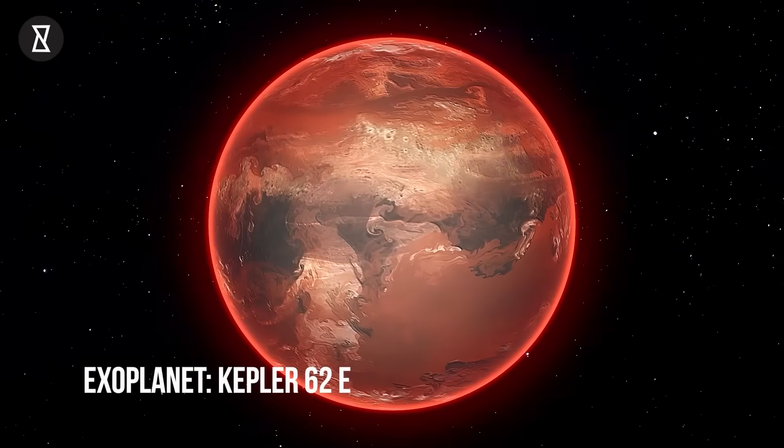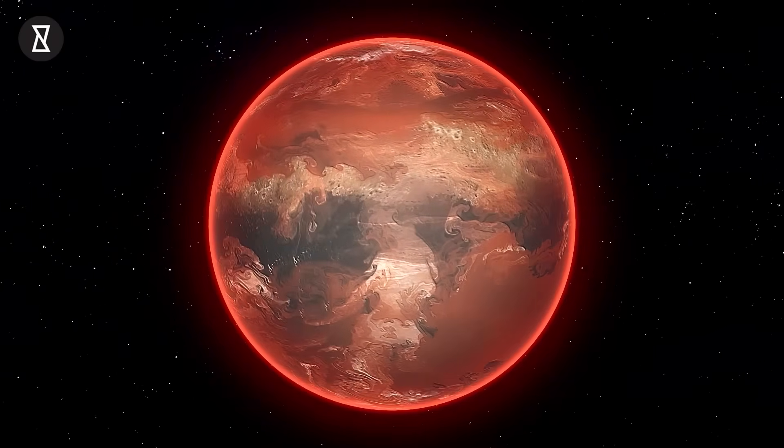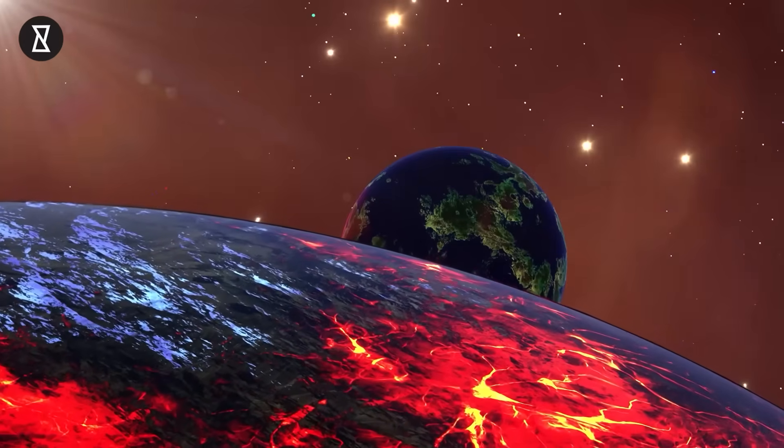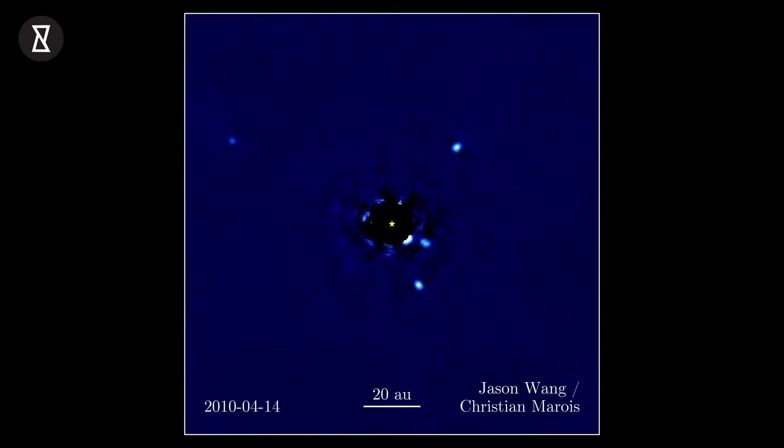Of all those alien worlds, only a handful have been seen directly. The poster child for such systems is HR 8799, whose four giant planets have been imaged so frequently that astronomers have produced a movie showing them moving in their orbits around their host star.